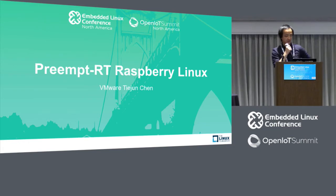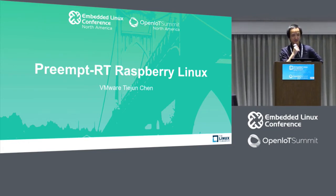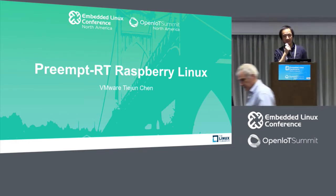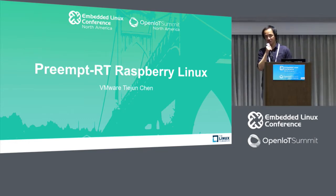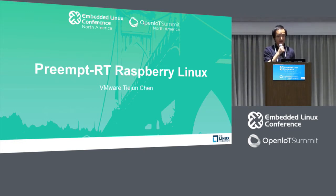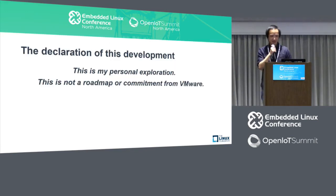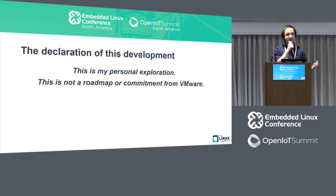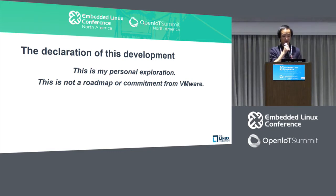Today I'm going to talk about preempt-RT for Raspberry Pi Linux. Frankly, I think it's a small story, but I think it should be helpful. If you are using Linux and probably use Raspberry Pi for some IoT application, I think the preempt-RT can contribute to some extent. I have to make this statement: it's just my personal development and personal exploration, so it's not a roadmap or commitment from VMware.